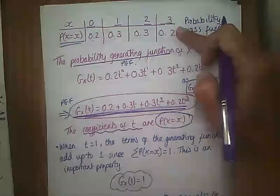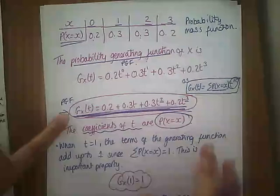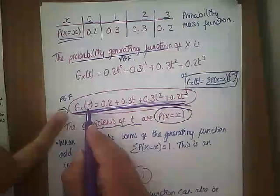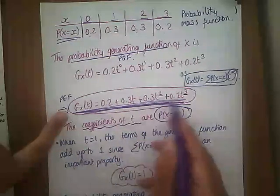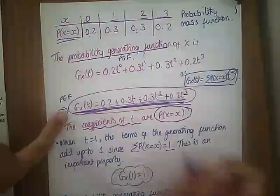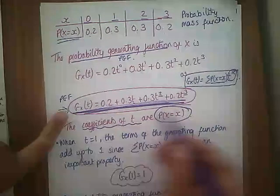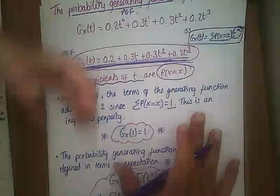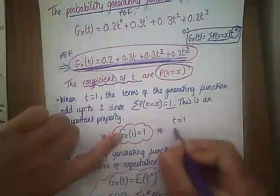Now what we will notice: if you substitute 1 in for t — i.e. you do G_X(1) — then every t term becomes 1, so we'd have 0.2 plus 0.3 plus 0.3 plus 0.2, which equals 1. And that will always happen, because with a discrete variable we can only have certain outcomes. So this is a very important concept surrounding PGFs: G_X(1) always equals 1.